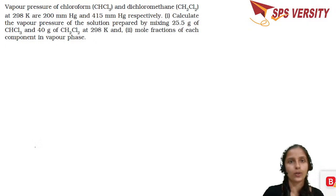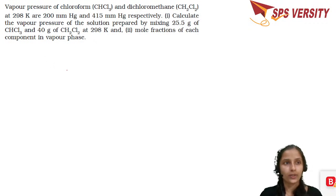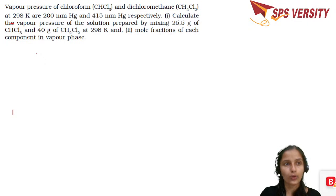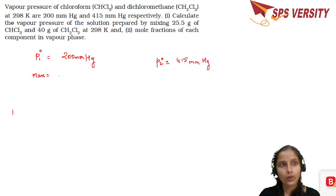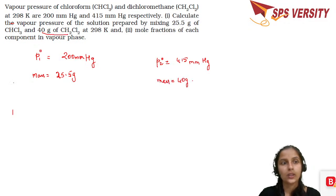Here is an in-text problem. The vapor pressure of chloroform and dichloromethane at 298 K are 200 mmHg and 415 mmHg respectively. So P1° (chloroform) = 200 mmHg and P2° (dichloromethane) = 415 mmHg. Calculate the vapor pressure of the solution formed by mixing 25.5 grams of chloroform and 40 grams of dichloromethane.